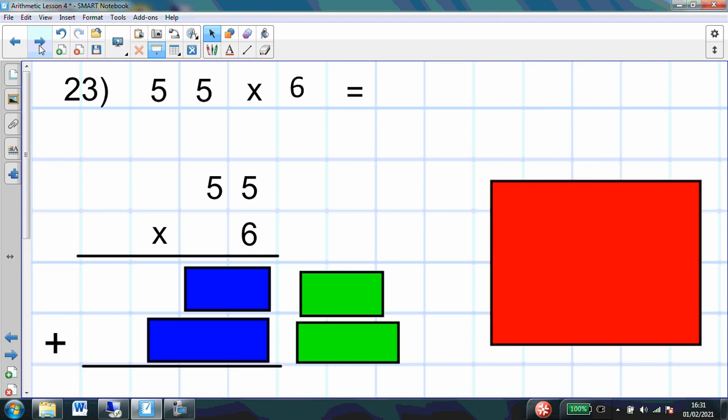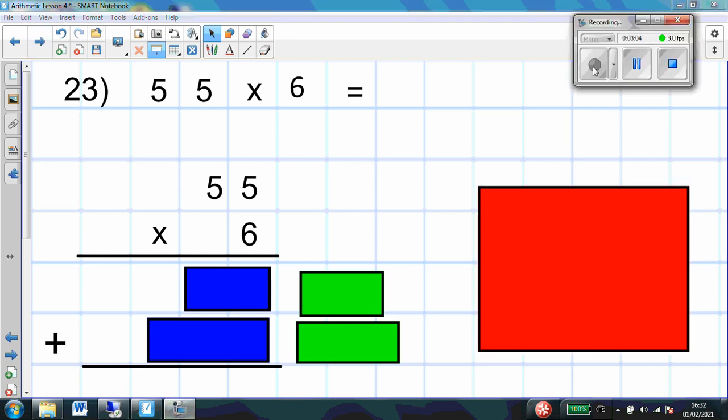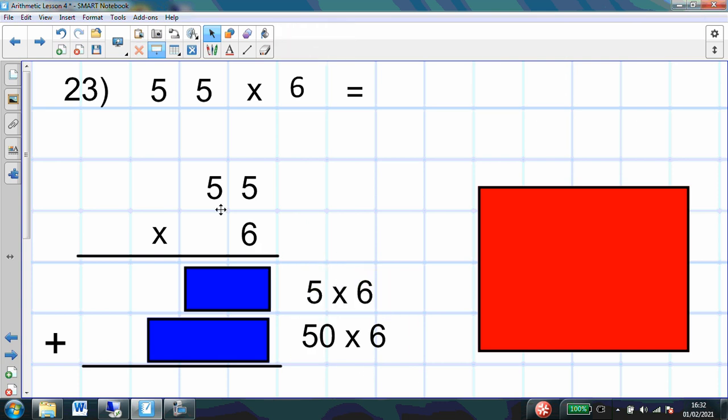Question 23. 55 times by 6. 55 multiplied by 6. Now there are actually a couple of ways I thought to do this. The first way I'll show you is the way that we normally multiply. So if I'm doing 55 multiplied by 6, I'm going to start by partitioning that 55. I'm going to partition it into the 50 and I'm going to partition it into the 5. So rather than 55 times 6, I've got the 5 times 6 and the 50 times 6.